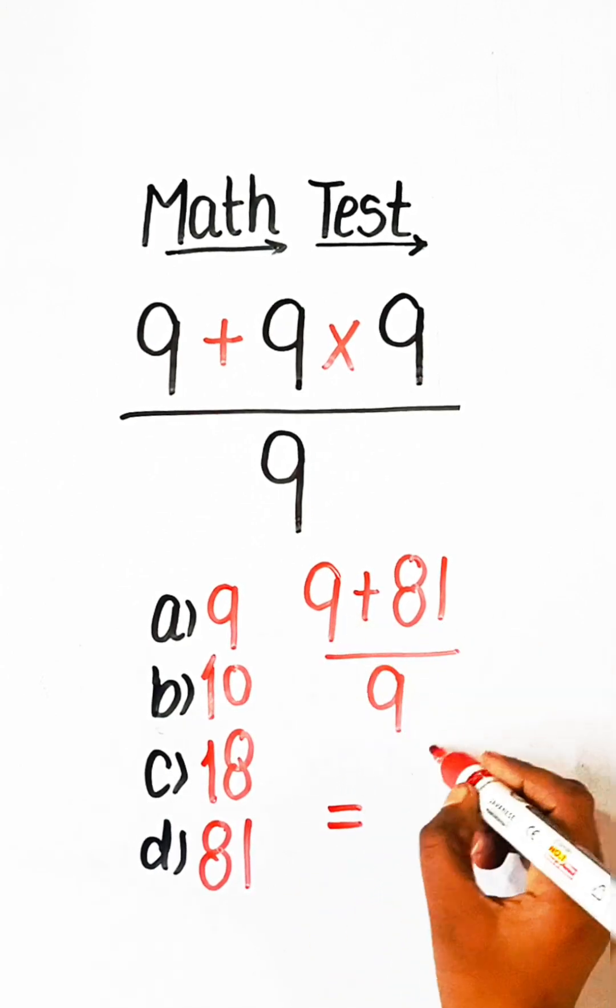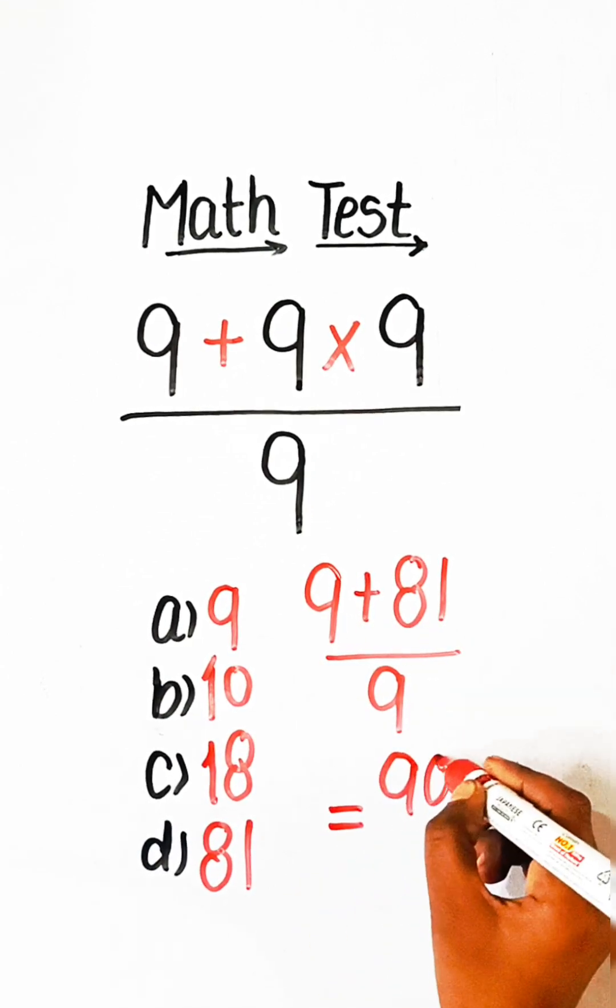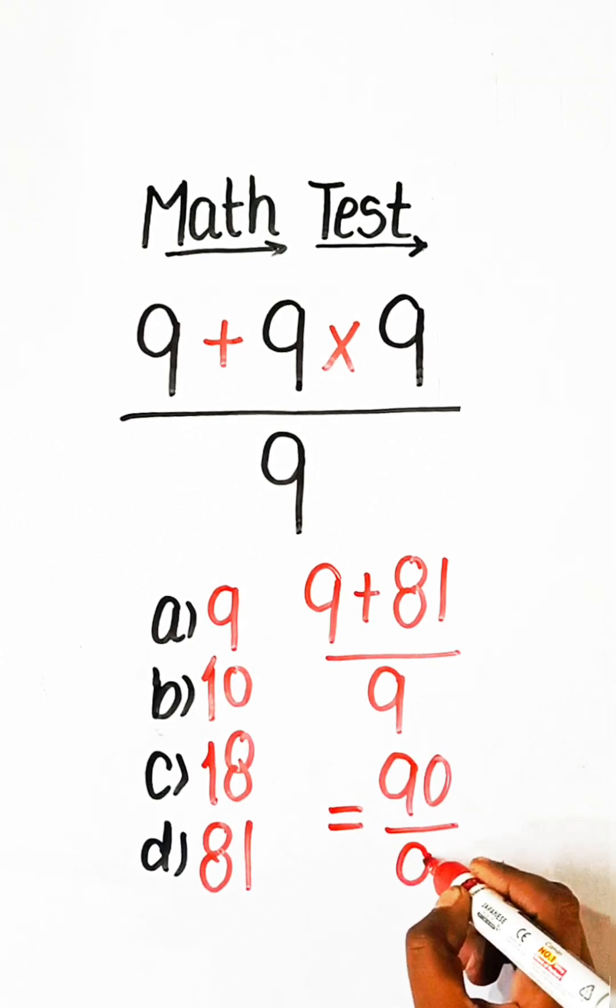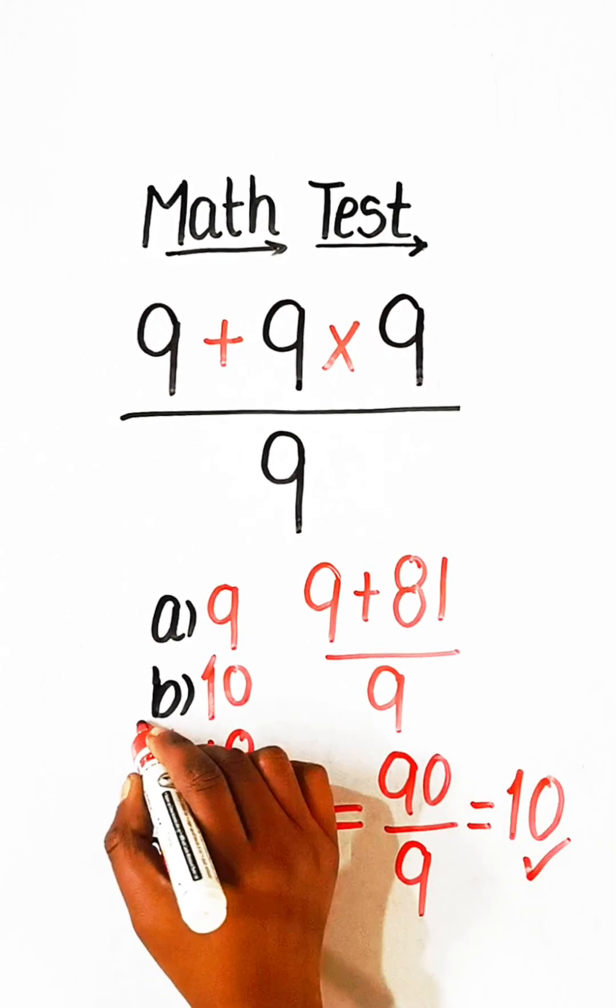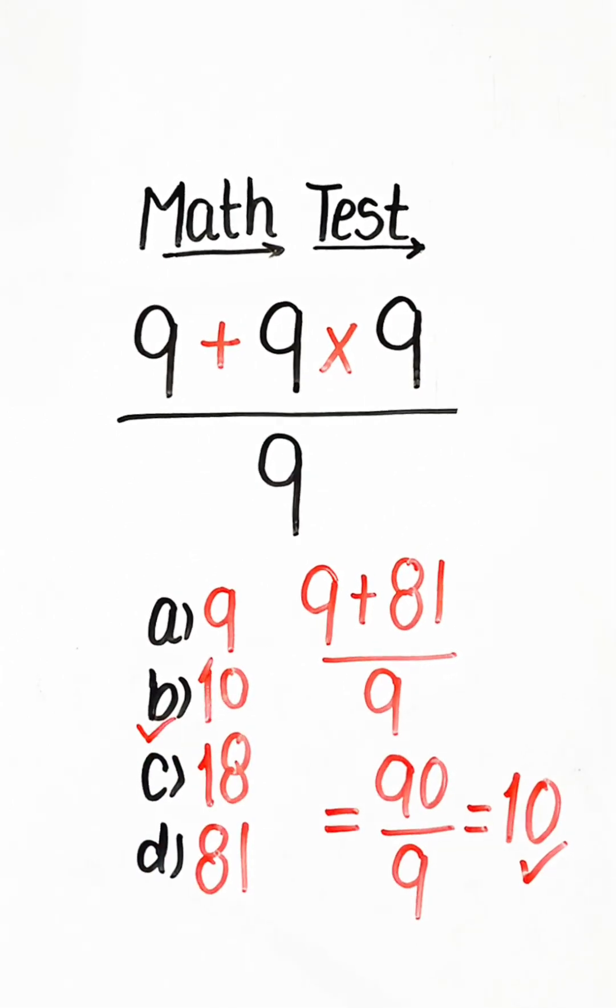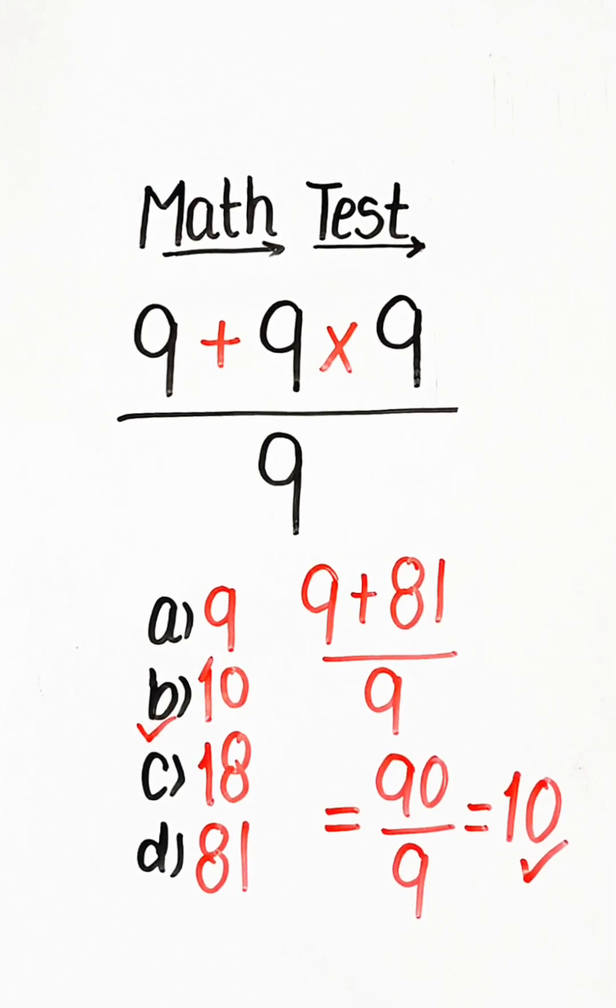9 plus 81 is 90 upon 9. So, we have answer 10. We will go with answer option B. 10 will be the correct answer.